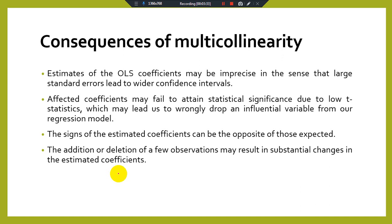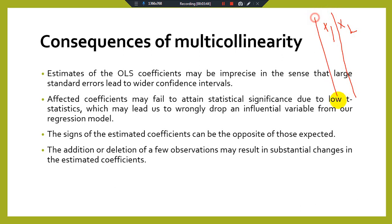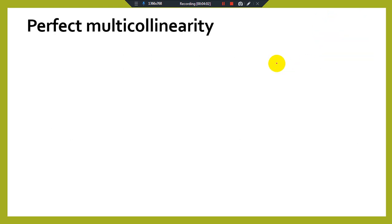The addition or deletion of a few observations may result in substantial changes in the estimated coefficients. If we have time series data and we remove some observations from x₁, and the coefficients are not changing, then there is less chance of multicollinearity between x₁ and x₂.